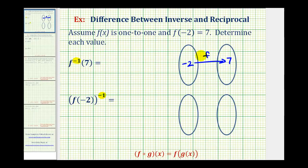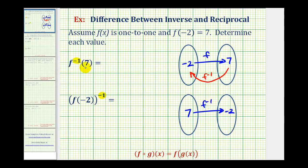F inverse will undo function f, which means f inverse will map positive seven back to negative two. Which means if we map f inverse, if the input is positive seven, then the output would be negative two for f inverse. So f inverse of seven is equal to negative two.